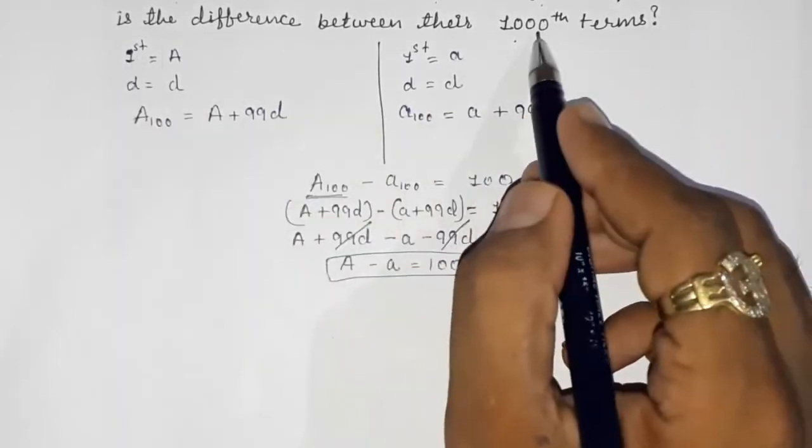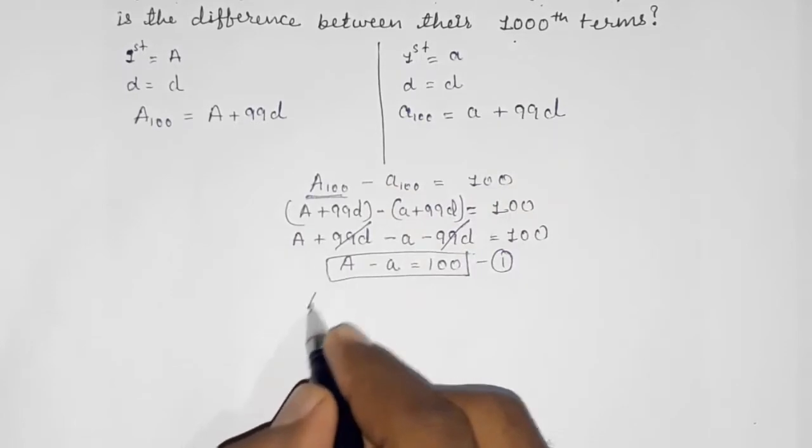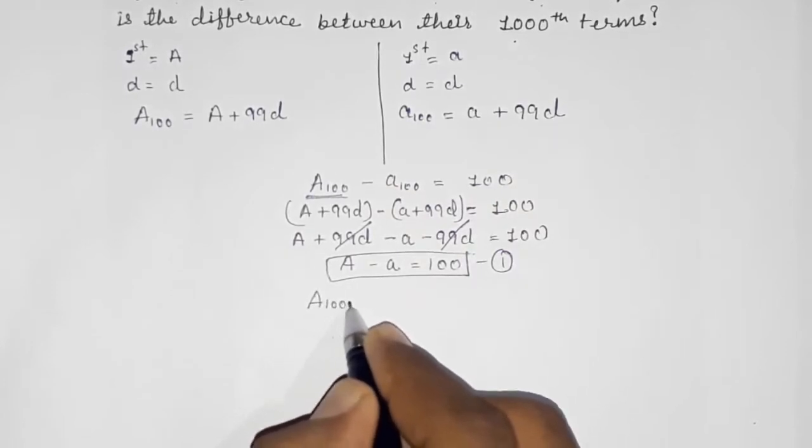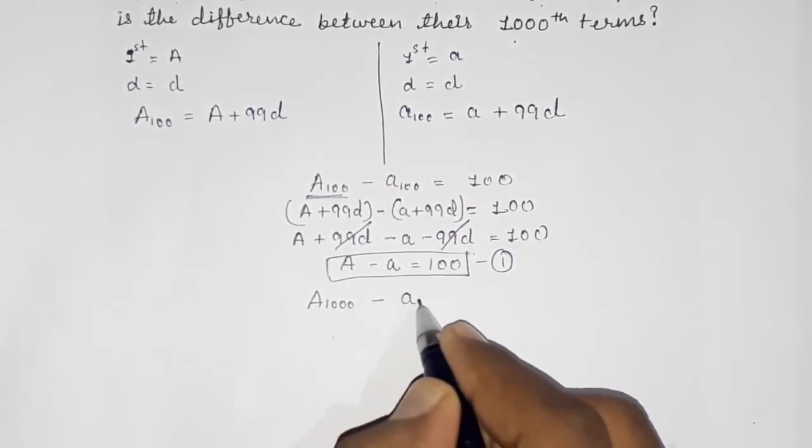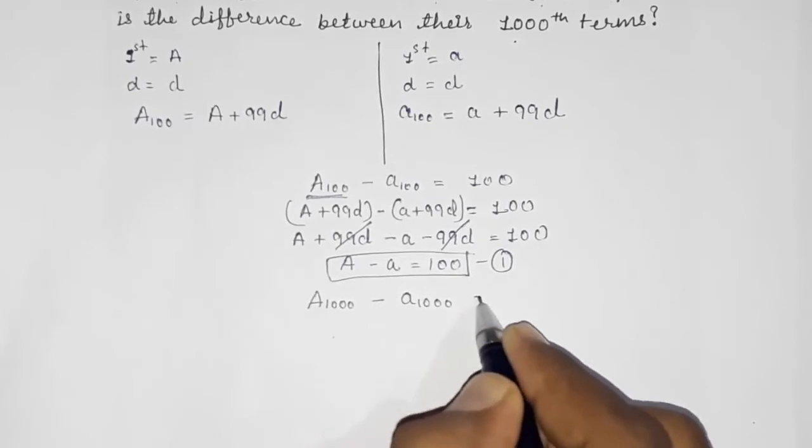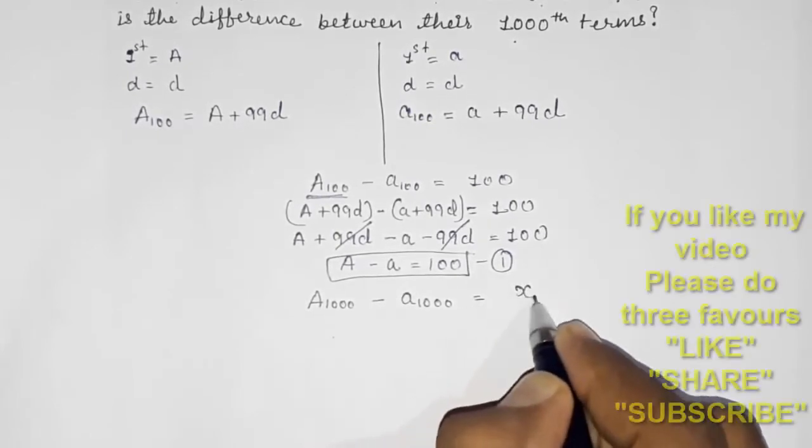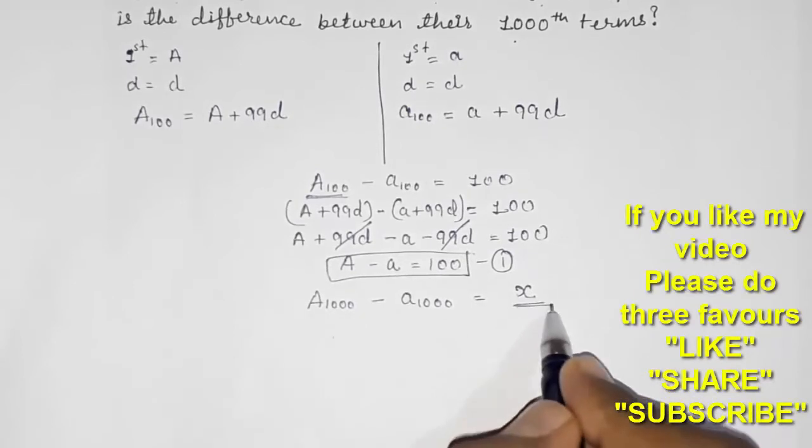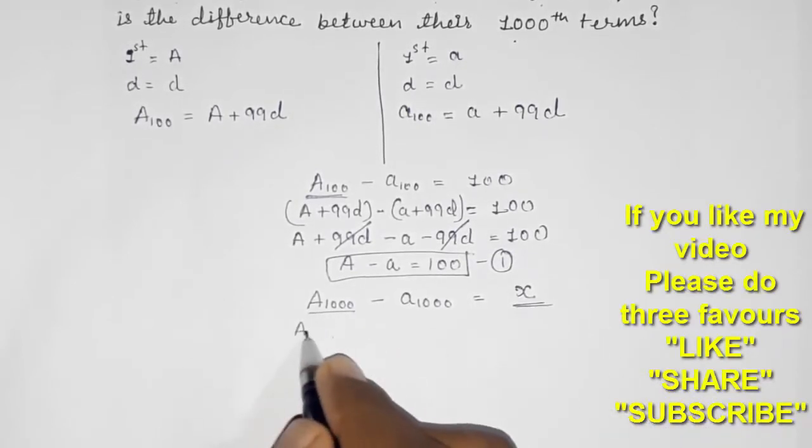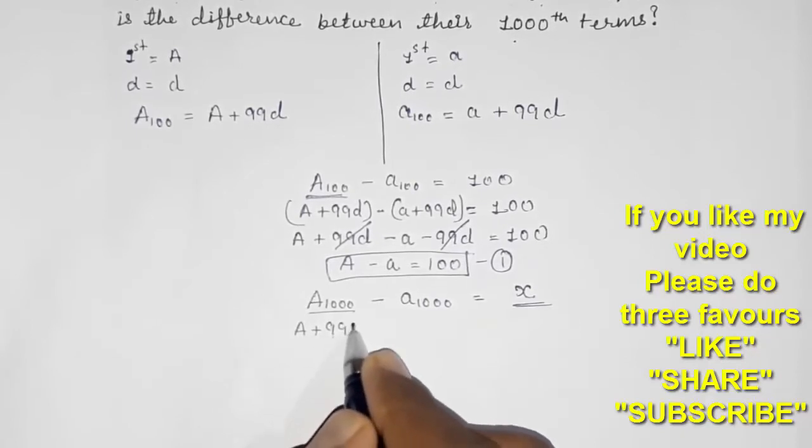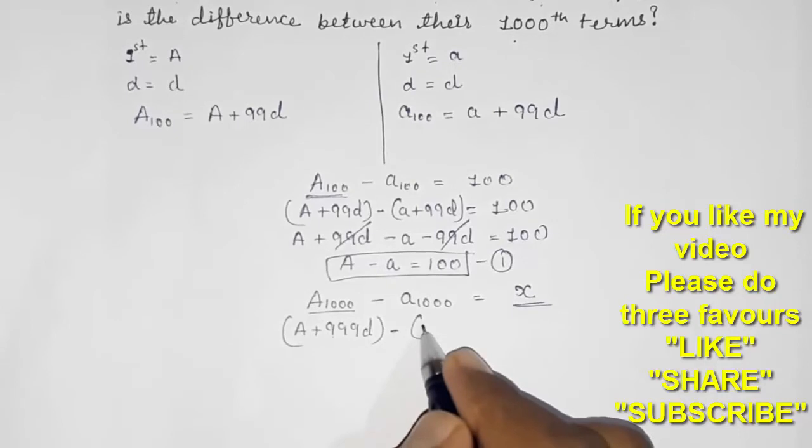So now I am going to find out the difference of 1000th term. A₁₀₀₀ minus a₁₀₀₀ is equal to question mark, or you can take x also. We don't know, so I am taking x. We want to find out this.